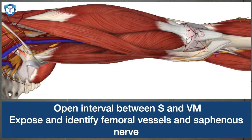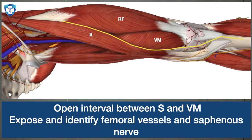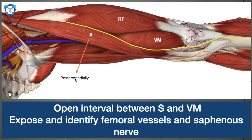These are the various muscles we need to identify: rectus femoris, vastus medialis, and sartorius. The interval we will open is between the sartorius and the vastus medialis. We retract the sartorius muscle posteromedially, which exposes the femoral vessels and the saphenous nerve.